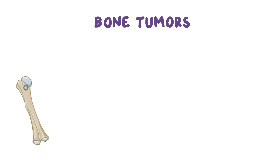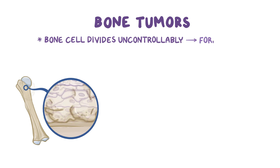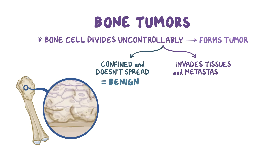Bone tumors form when a bone cell divides uncontrollably and forms a mass or tumor. If the tumor remains confined and doesn't spread into surrounding tissues, then it's considered benign. But if the tumor invades into surrounding tissues and metastasizes, or spreads through blood or lymph, then it's considered malignant.